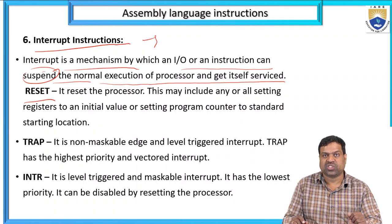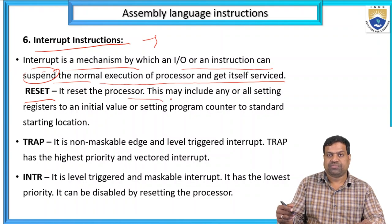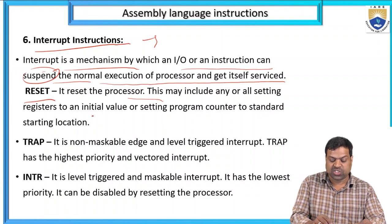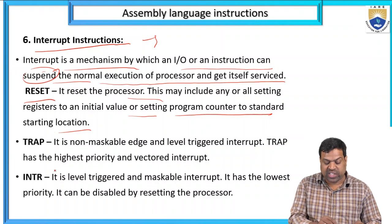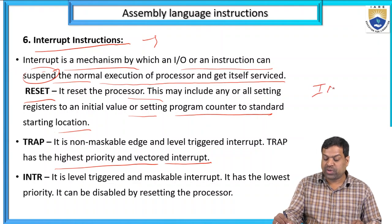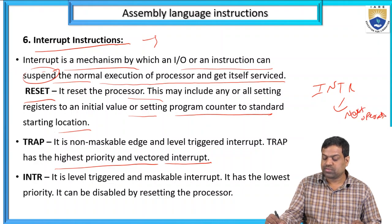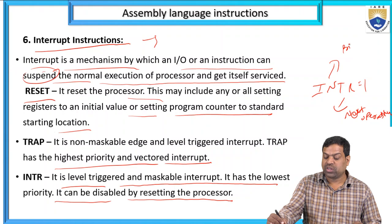Interrupt instruction means: when multiple programs occur, I go for the instruction. RESET means I stop one program and go for a new program — that program ends and the next operation starts. TRAP means going from one operation to another. When interrupt is enabled, priority is assigned; if interrupt equals zero, there is no priority.